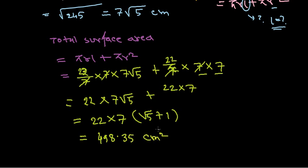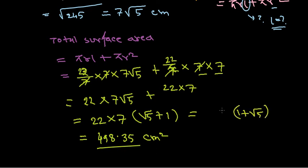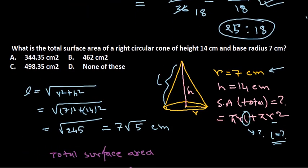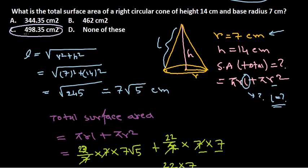The result is 498.35 square centimeters. If you have a calculator you can get this value easily. For competitive exams that don't allow calculators, you can leave the answer as 22 × 7 × (√5 + 1) up to that simplified level. Checking the options, this value corresponds to option C, which is the correct answer.